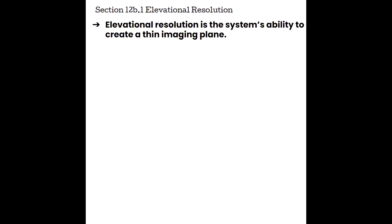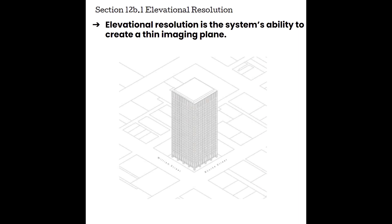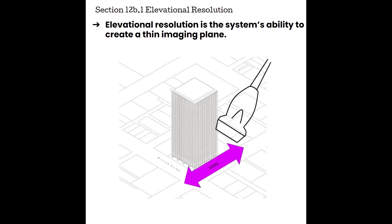Elevational Resolution is a system's ability to create a very thin imaging plane. When we're imaging, we think about our beam as being super thin, but in reality it actually has some thickness to it. If we think of our transducer beam like a building on a street, axial resolution would be walking down the street directly away from the transducer, parallel with the beam. Lateral resolution would be walking side to side, perpendicular to the beam. Elevational resolution is the number of floors the building has, or the height of the beam.